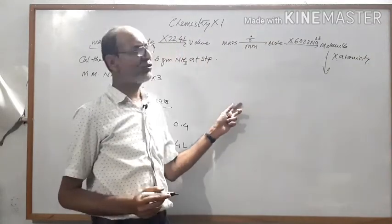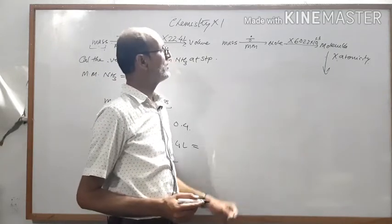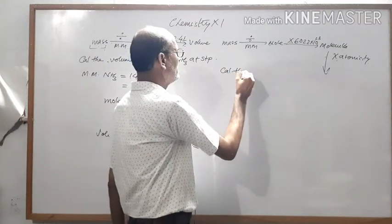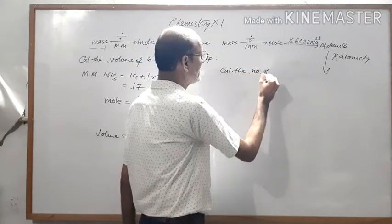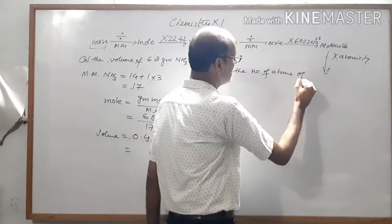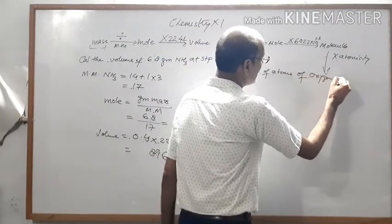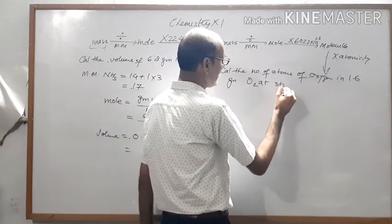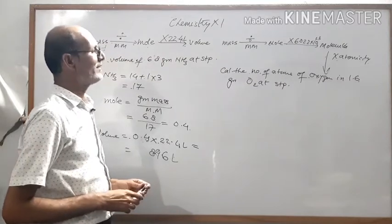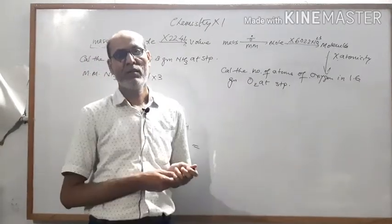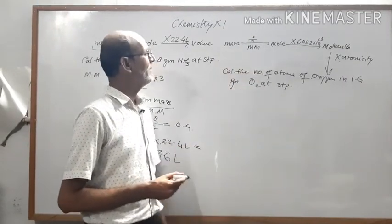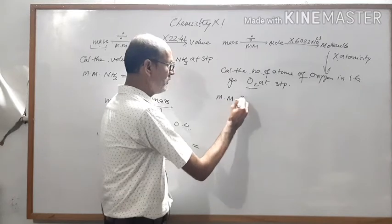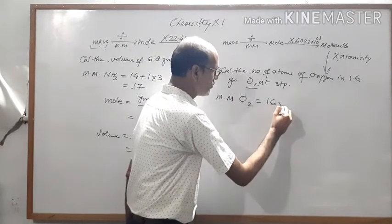Suppose you want to calculate the number of atoms or molecules in a given mass of gas. The question is: calculate the number of atoms of oxygen in 1.6 gram O2 at standard temperature and pressure. First, we convert mass into moles by dividing by molecular mass. For oxygen, it is O2, so 16 into 2 equals 32.